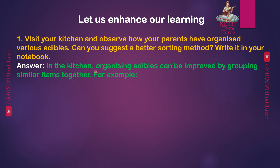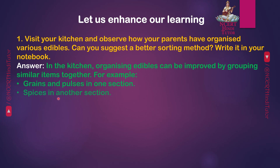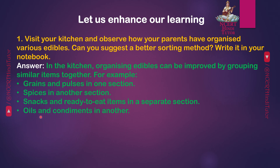Answer: In the kitchen, organizing edibles can be improved by grouping similar items together. For example, grains and pulses in one section, spices in another section, snacks and ready-to-eat items in a separate section, and oils and condiments in another. Use transparent containers for easy identification and label each container for quick access.